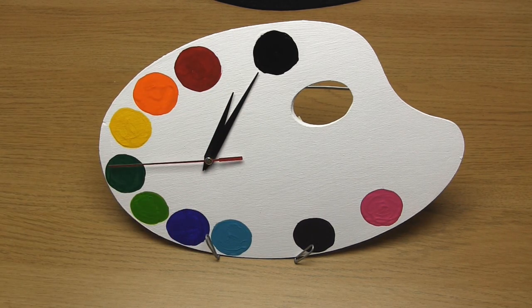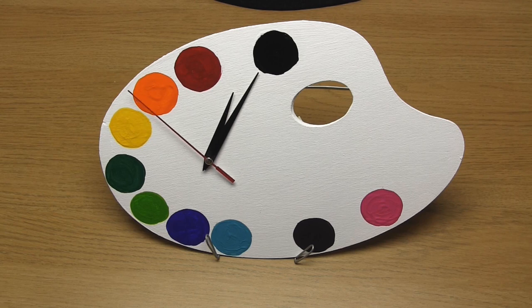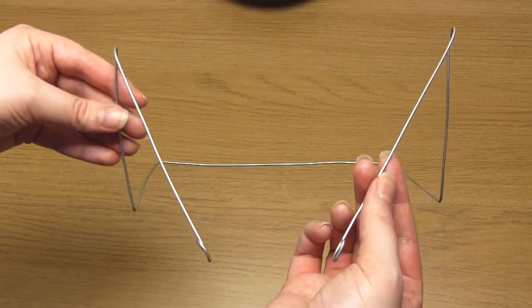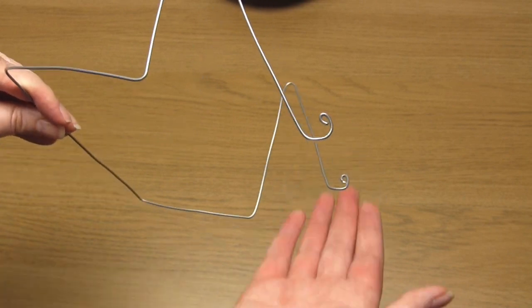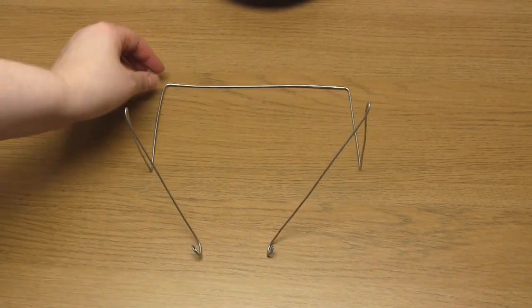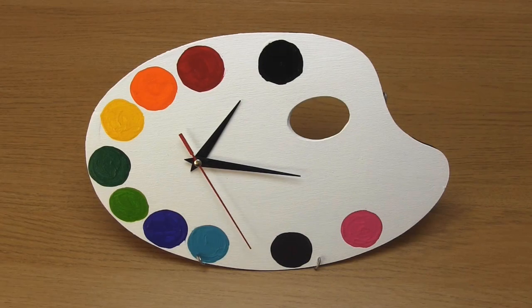As you can see, my second hand got stuck on one of the wire hooks at the front, so I cut off some excess wire and made the hooks much smaller to rectify this problem. And as you can see, it now works perfectly.